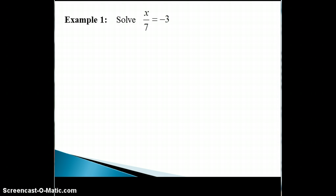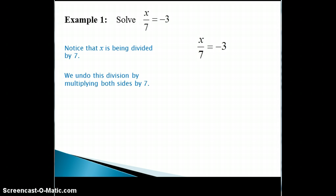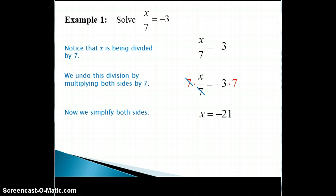For this example, x is being divided by 7. So we would use the opposite operation to undo the division, which is multiplication. Thus, we can use the multiplication property to multiply both sides by 7. The 7's will cancel each other out, leaving x by itself. Simplifying both sides, we get x equals negative 21, so our solution set for this equation has one solution of negative 21.